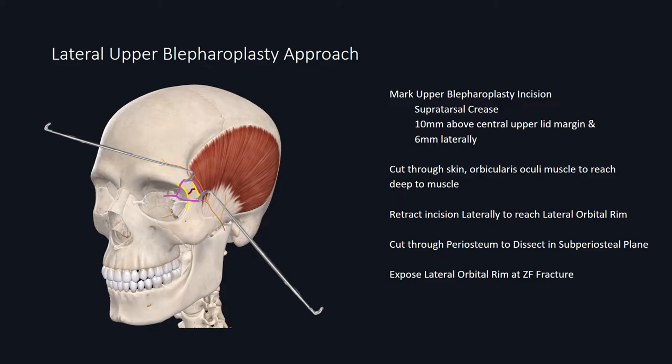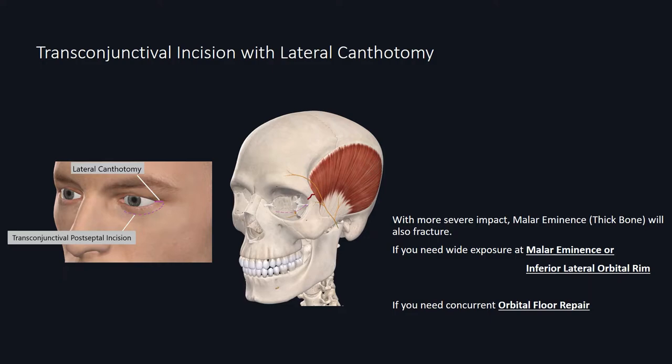Next, we'll discuss an additional approach for wider exposure around the orbital region: the transconjunctival approach with lateral canthotomy. In more severe impact, the malar eminence bone can also fracture. If you need wider exposure at the malar eminence or the inferior part of the lateral orbital rim, you will need additional exposure by using transconjunctival incision with lateral canthotomy. If you have a very large orbital floor defect, you can also use this approach.